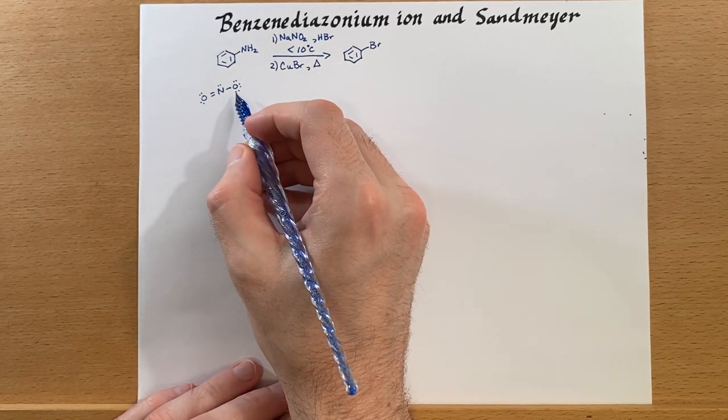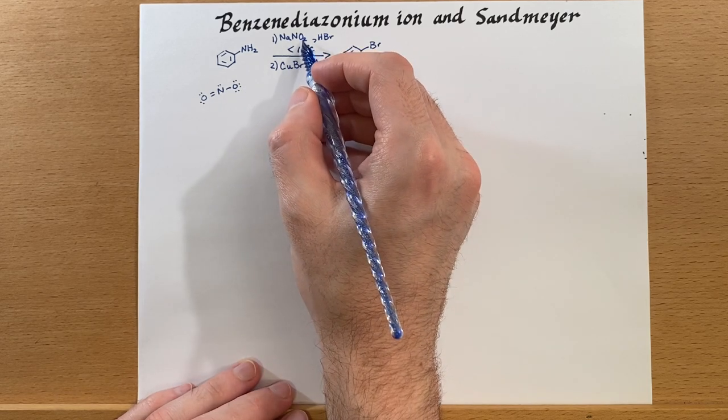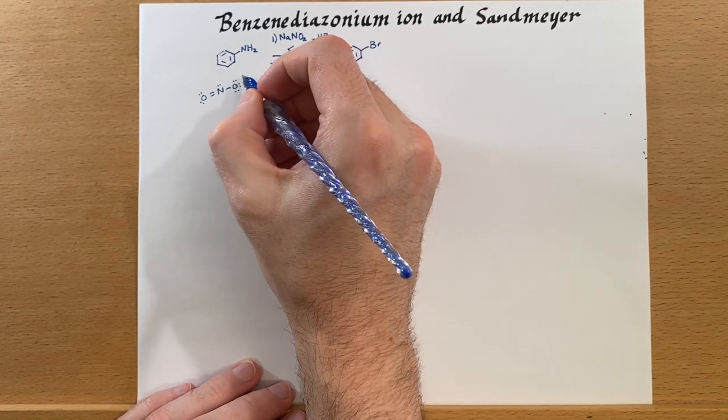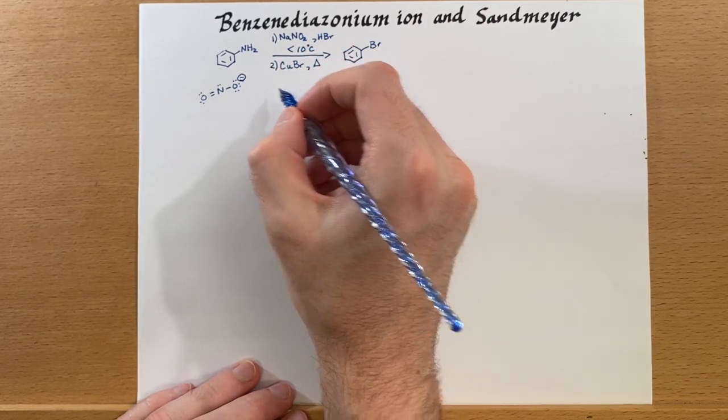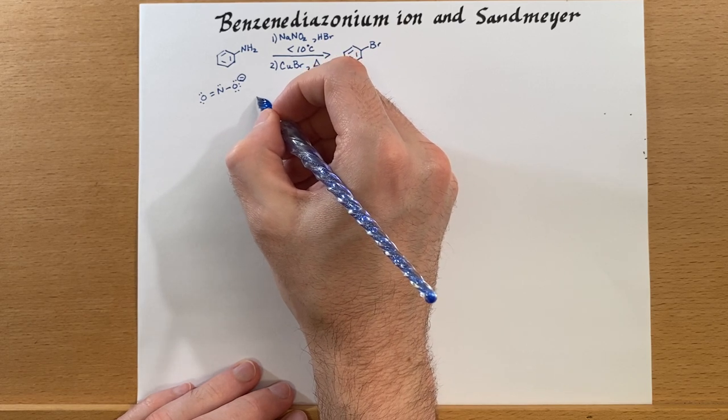So here is our nitrite. So we have sodium nitrite. This is NO2, not NO3, nitrite. And we're going to protonate that to generate nitrous acid.